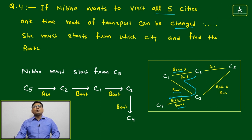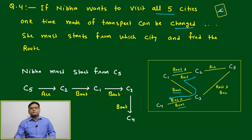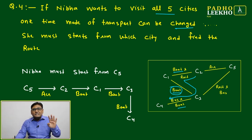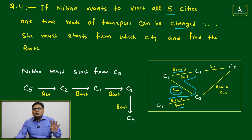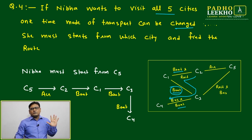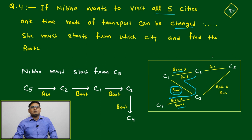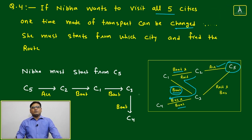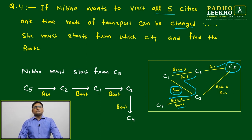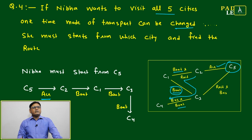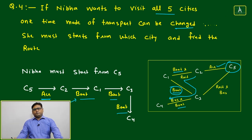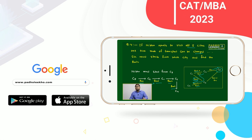Four cities can be covered with only one mode of transport — boat. We have one more city, C5, to cover with one additional mode. So we start from C5, take air to C2, then change to boat and continue C2 → C1 → C3 → C4. Starting with air, Niva travels to C2 by air, then changes to boat, and continues by boat all the way to C4, covering all five cities with only one mode change.